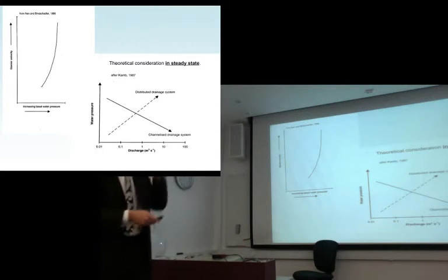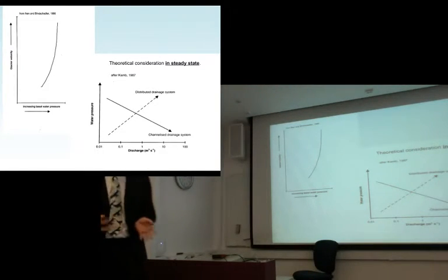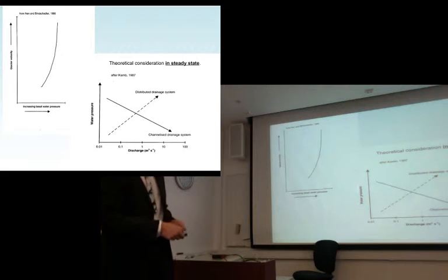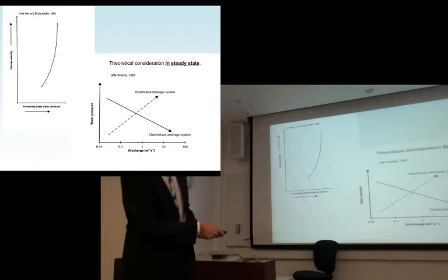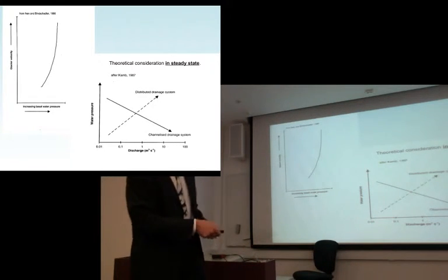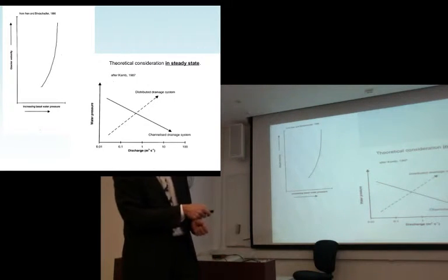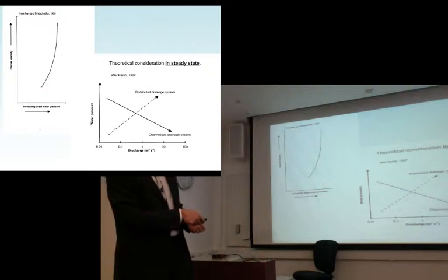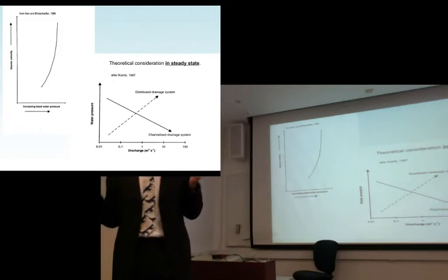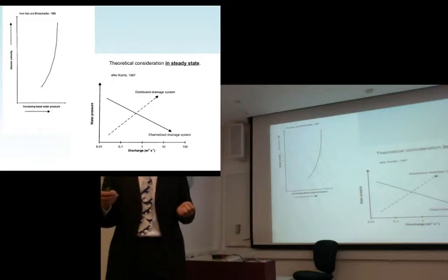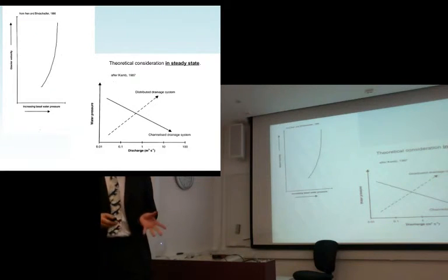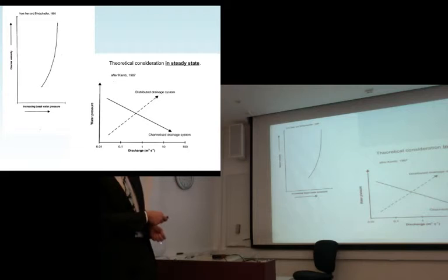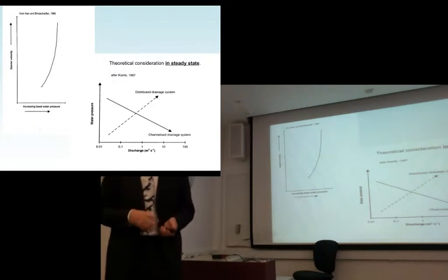The link between water pressure and discharge is complicated by the structure of the subglacial drainage system. If you've got very efficient channels, as discharge goes up, water pressure is expected to go down. If you've got an inefficient system like a film or a cavity, you can't evacuate the water easily, so pressure goes up. Two very different pressure responses to drainage system structure will impact ice velocity differently depending on the type of structure at the ice-bed interface. Knowing how the subglacial drainage system and subglacial processes operate is therefore crucial to ice dynamics.